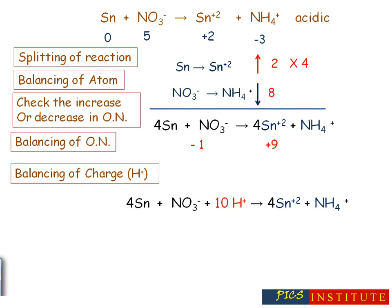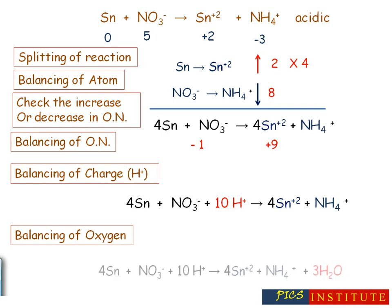Oxidation number is balanced and charge is balanced. The last step is balancing of oxygen. The left-hand side consists of three oxygen atoms and the right-hand side has zero oxygen, so we will add three water molecules to the right-hand side to balance oxygen atoms. By this way we can obtain a balanced redox reaction.